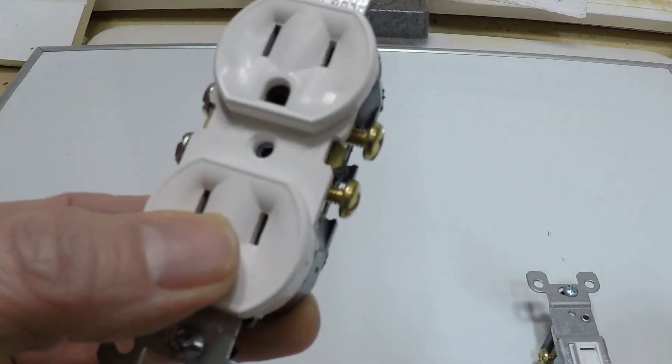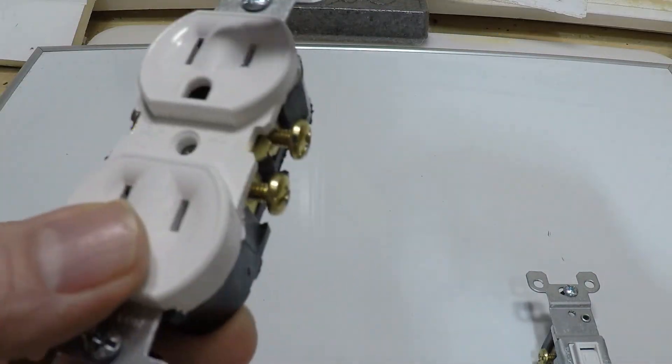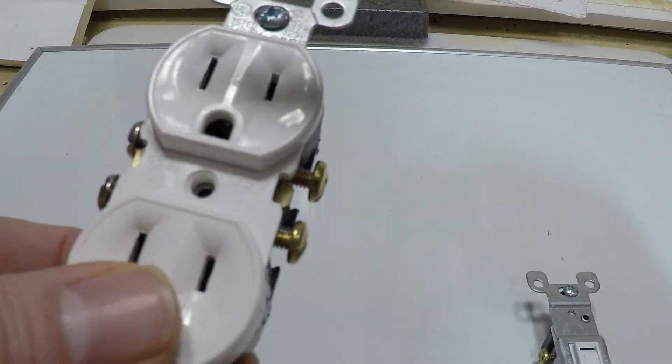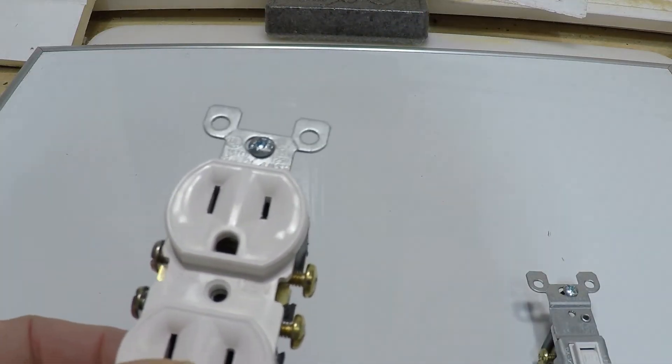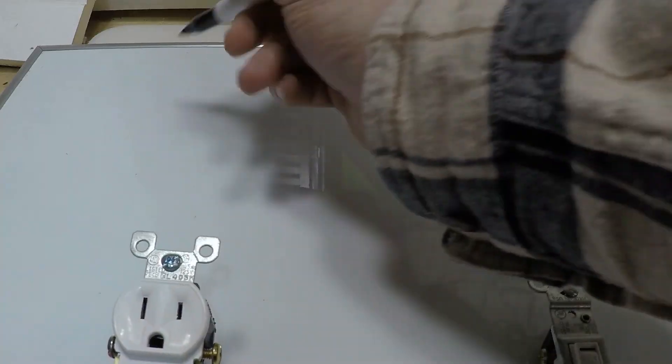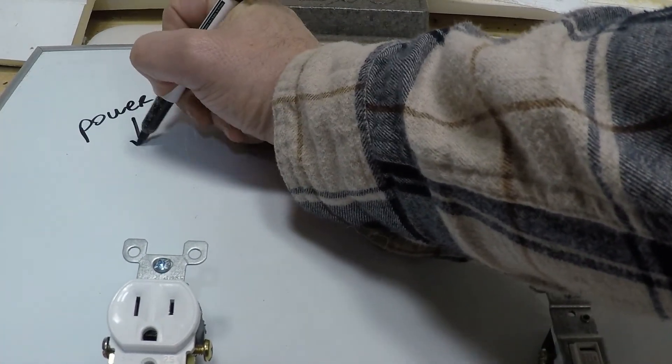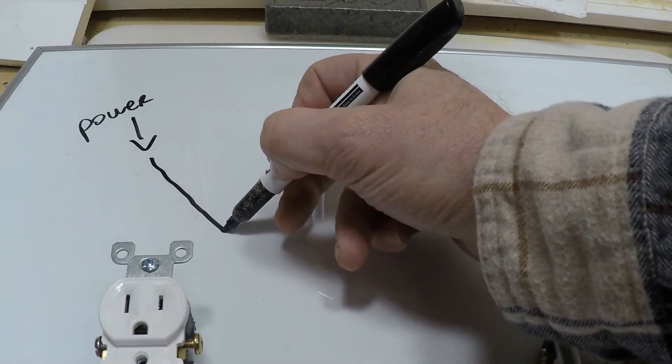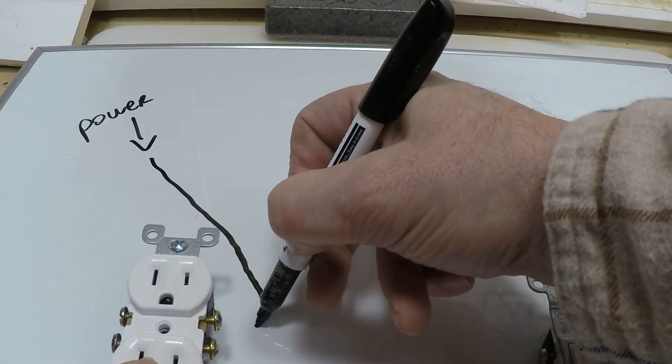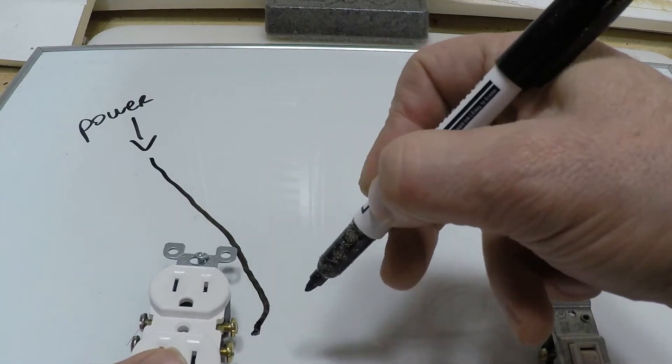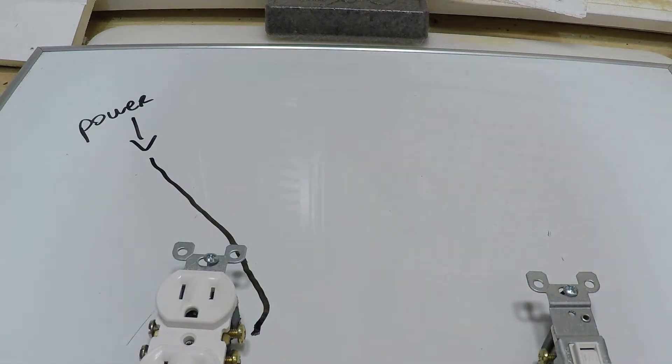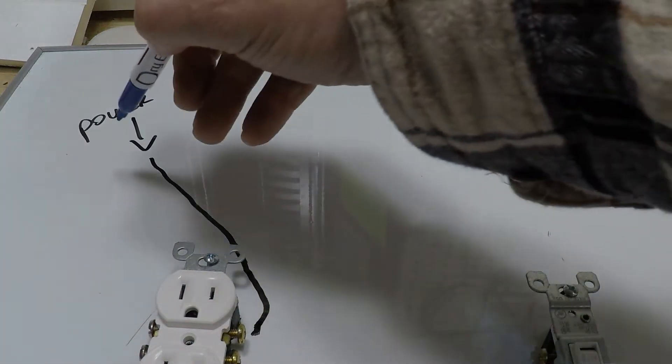So when you bring your hot and your neutral in—the top and the bottom on the back end from the power source—we can draw the diagram here. Power going this way, and the power goes to this screw—looks like the brass screw—and the neutral goes to this screw on this side.